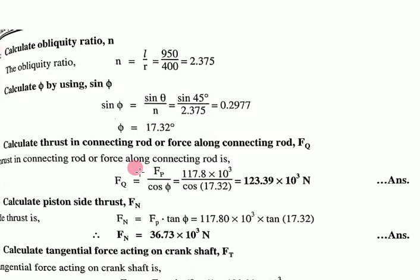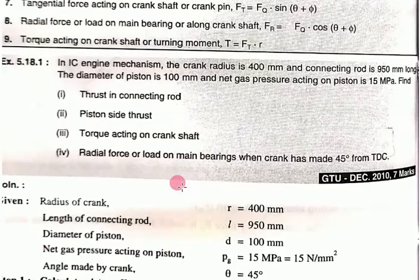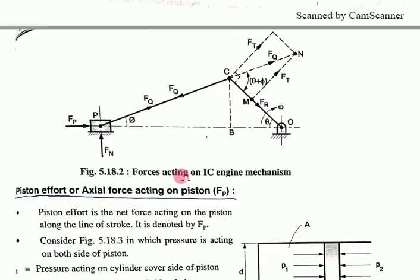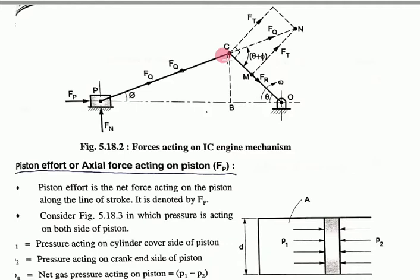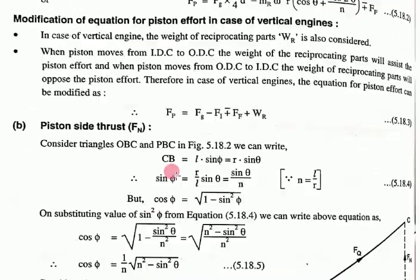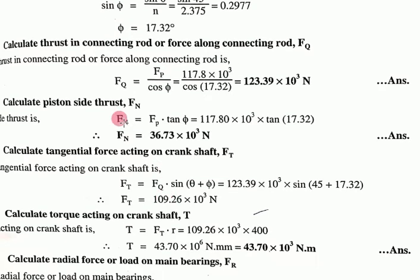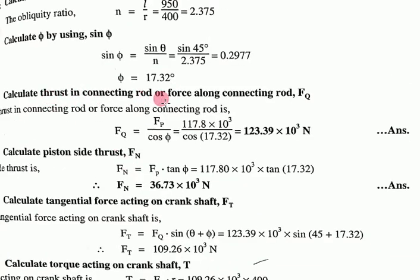The relation between θ and φ is sin φ = sin θ / n. From this we can find angle φ. Remember to draw this figure and reference it while solving examples. Thrust in connecting rod Fq = Fp / cos φ, giving us the thrust load.